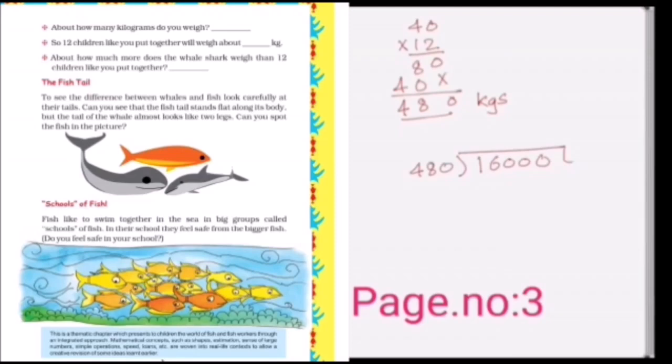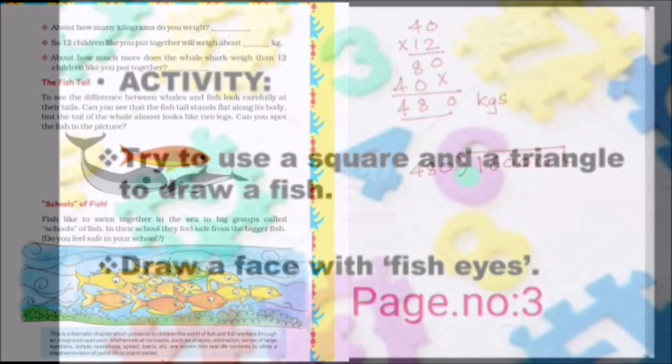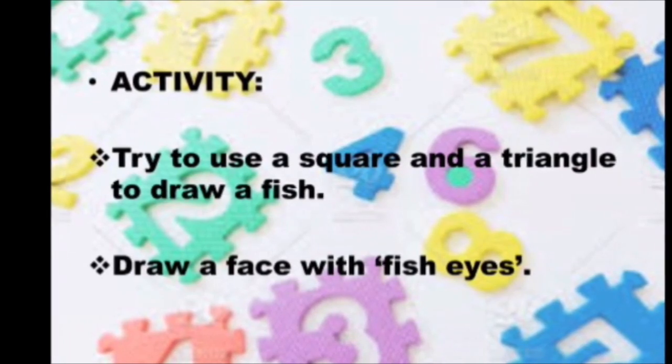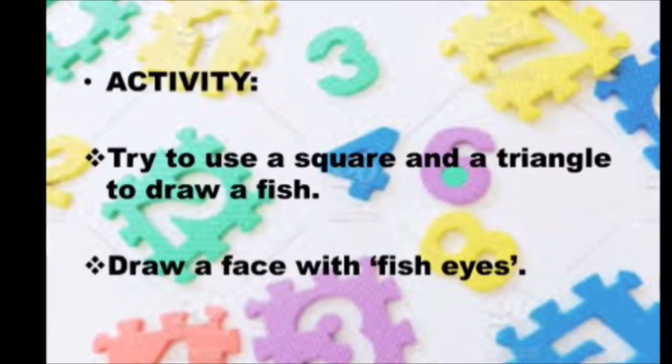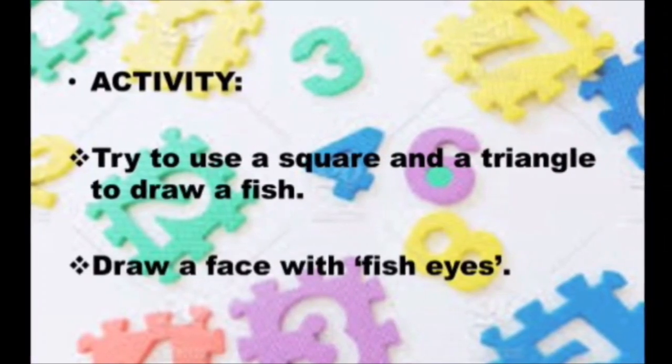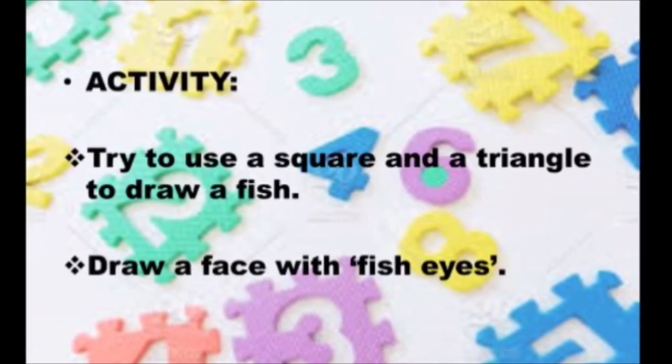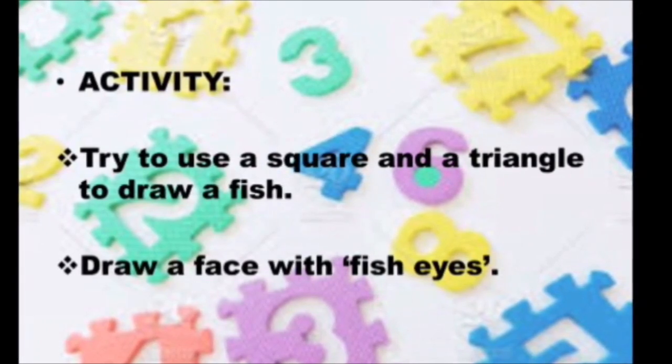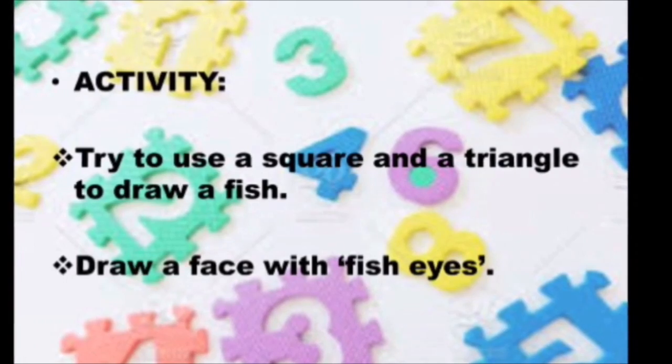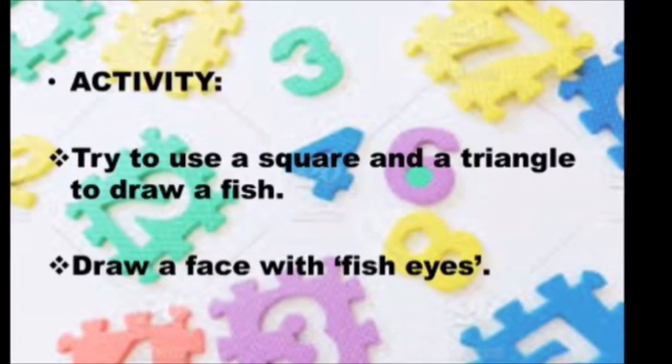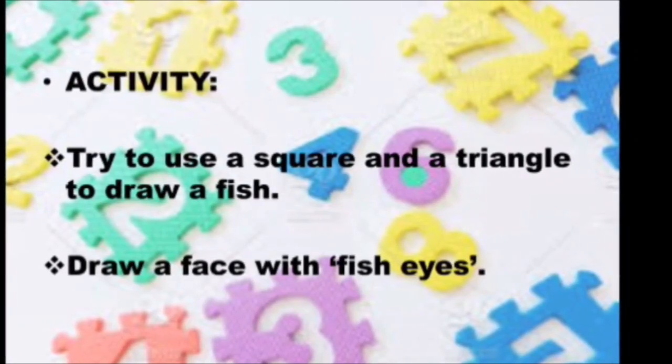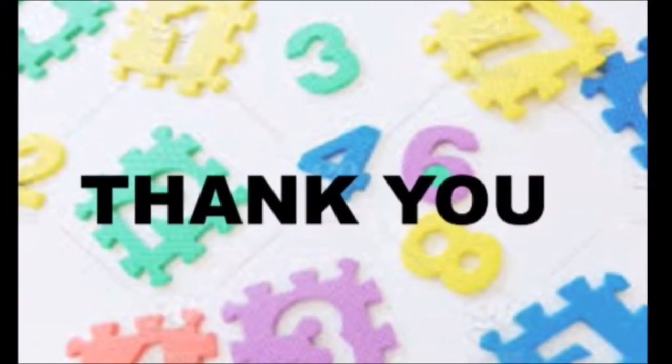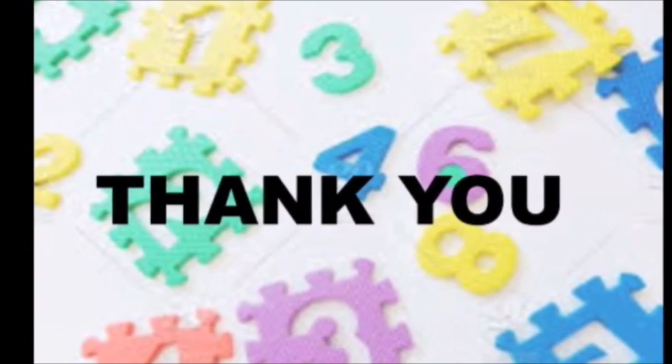Do the division and fill the answer in the third blank. Now it's time for work, students. Here I have given two activities. The first one is try to use a square and a triangle to draw a fish. The next one is draw a face with fish eyes. These two activities you have to do in your classwork. You have the sideways note for mathematics, right? You have to draw these two activities in your classwork. Okay students, I'll catch you with another session by continuing this chapter. Thank you.